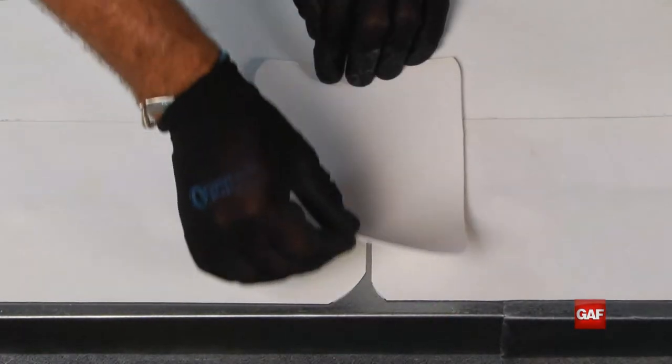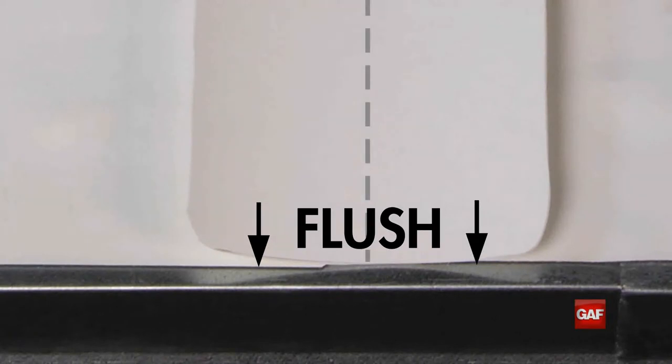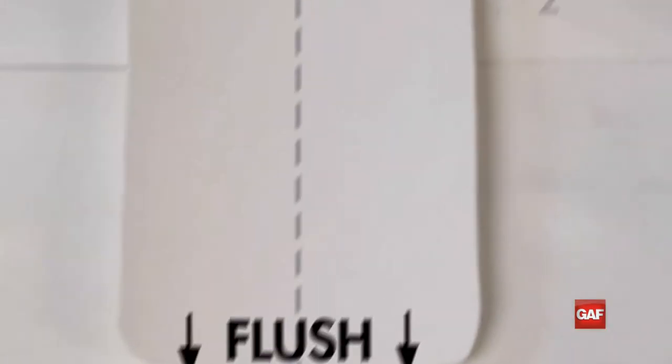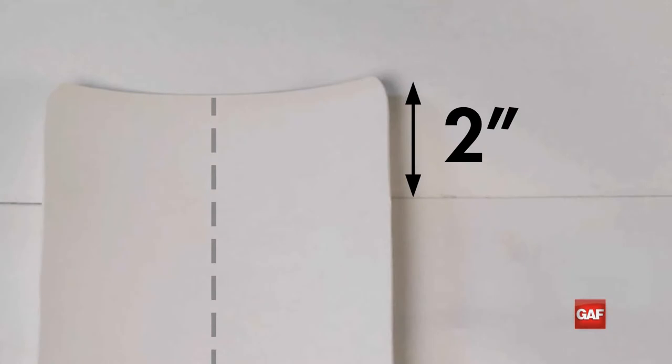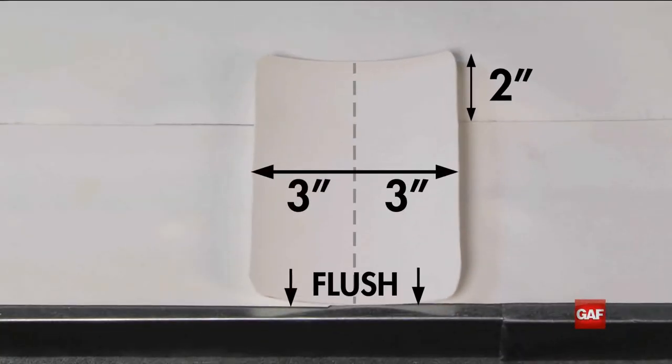Position the patch in place with a 6 inch side flush with the cover tape at the roof edge and centered on the butt joint. This should extend approximately 2 inches beyond the heat weld cover tape onto the roof deck and approximately 3 inches on either side of the butt joint.